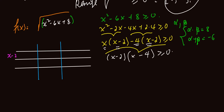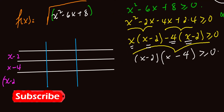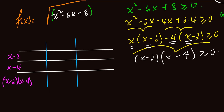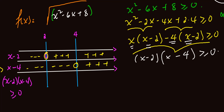We have x minus 2 and x minus 4 as factors. The product x minus 2 times x minus 4 must be greater or equal to 0. On the number line, at x equals 2, x minus 2 equals 0, and at x equals 4, x minus 4 equals 0. To the left of 2, both x minus 2 and x minus 4 are negative, so negative times negative gives positive. Between 2 and 4, x minus 2 is positive and x minus 4 is negative, so positive times negative gives negative. To the right of 4, both are positive, so positive times positive gives positive.